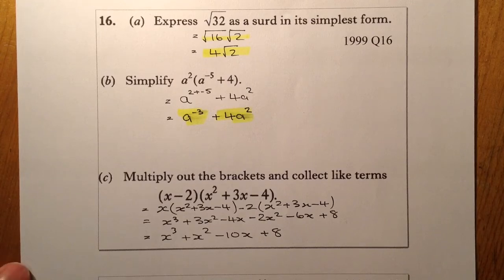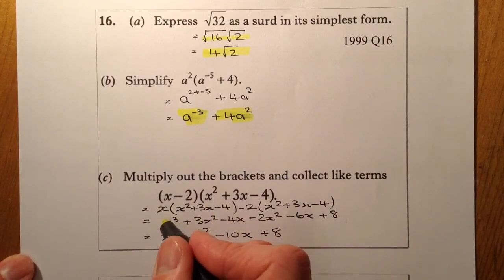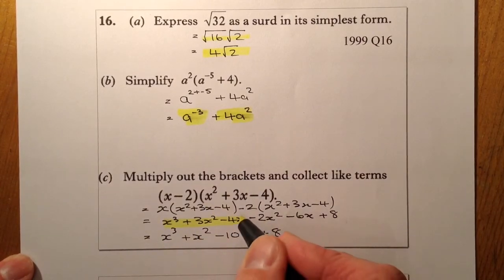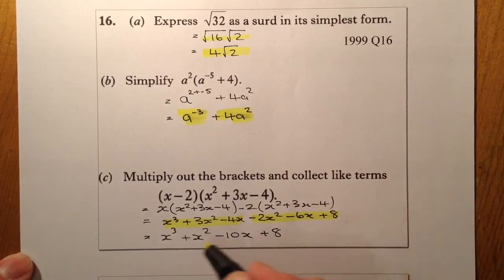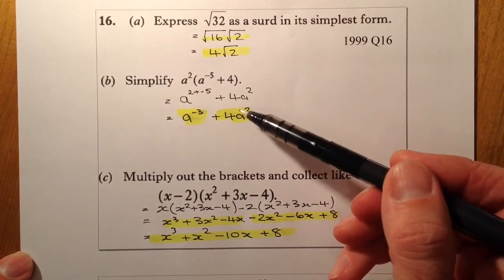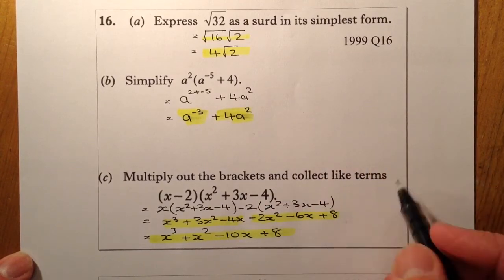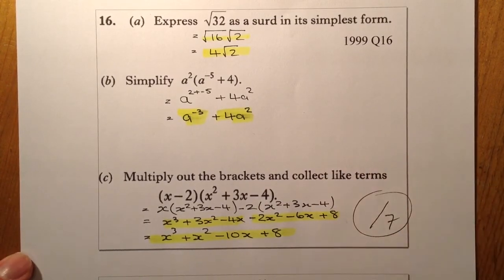Right, the way this will be marked will be one mark for multiplying out the first part of the bracket here, and then another mark for multiplying this part out, and finally a mark for gathering it up correctly there. So this question here, out of 1, 2, 3, 4, 5, 6, 7. So this will be out of 7 marks.